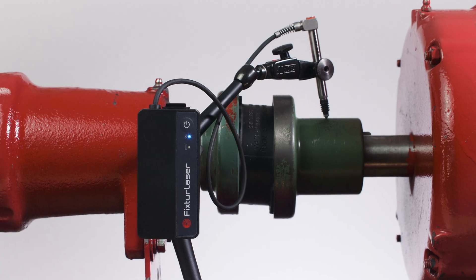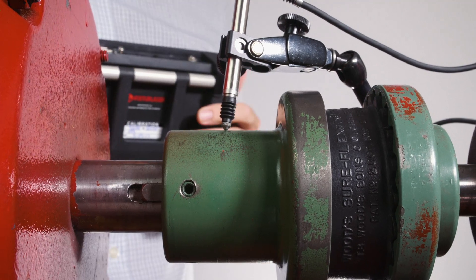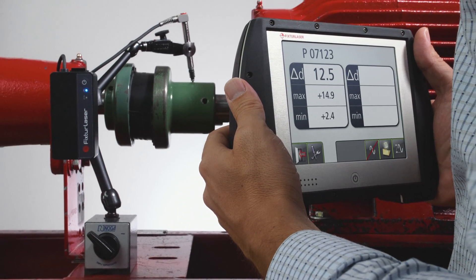Introducing the Fixture Laser Runout Probe, a simple electronic tool designed to easily and accurately detect and measure shaft runout and pipe strain.